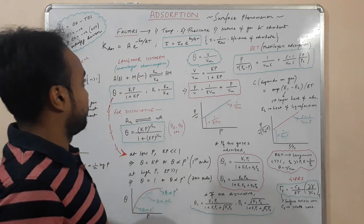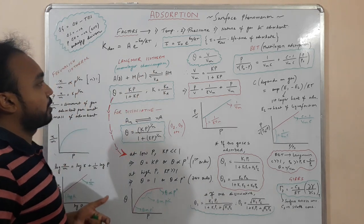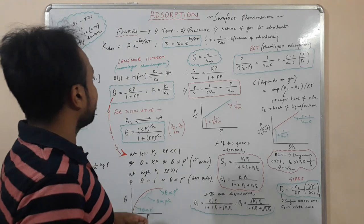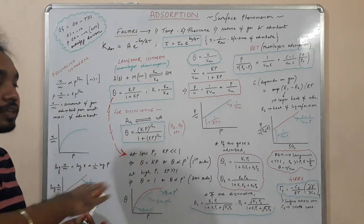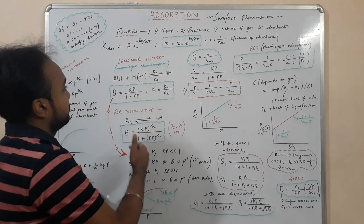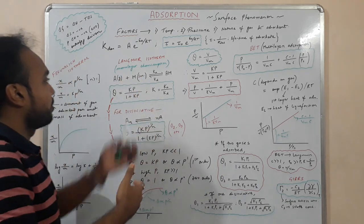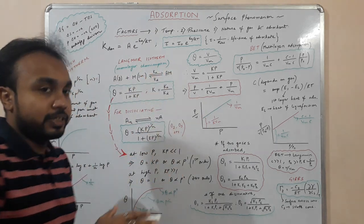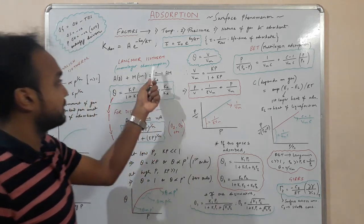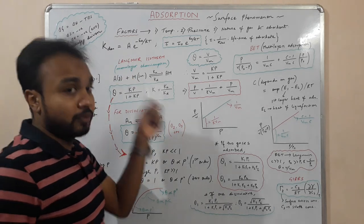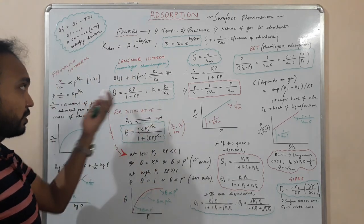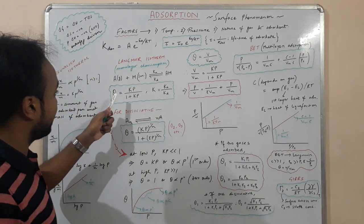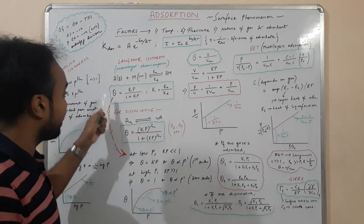The Langmuir isotherm is the most important part of this chapter — questions are asked every year in GATE and NET. Langmuir isotherm involves monolayer chemisorption only. If gas A gets adsorbed on a metal surface M, it forms adsorbed species A·M. The rate constants kₐ and k_d govern adsorption and desorption. The important formula is: θ = kP / (1 + kP), where θ is the surface coverage and k = kₐ/k_d.